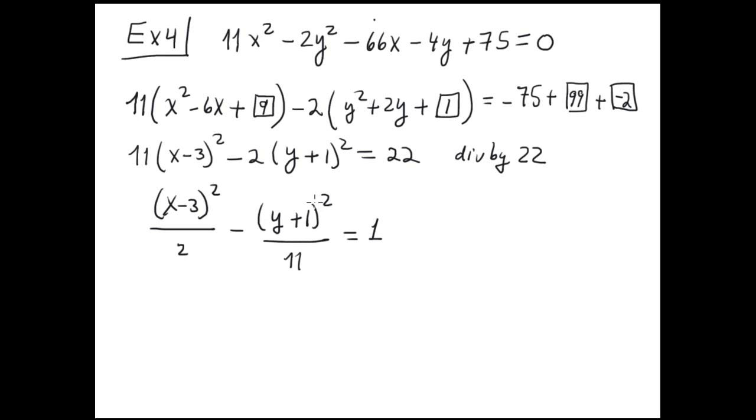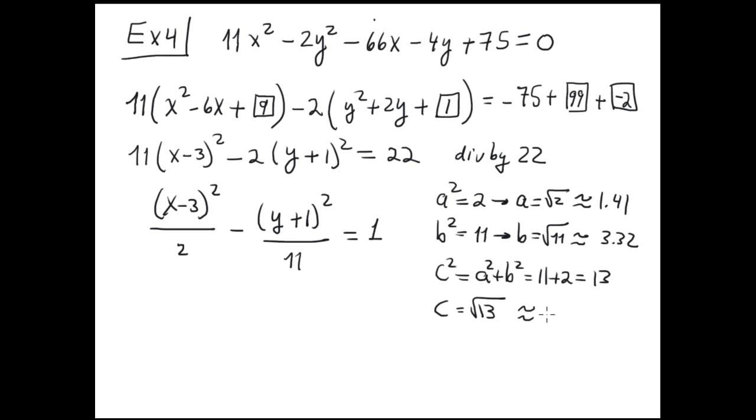Identification. This hyperbola has the transverse axis parallel to the X axis. A squared is 2, then A is radical 2, and radical 2 is approximately 1.41. B squared is 11, B equals radical 11, and radical 11 is approximately 3.32. And C squared equals A squared plus B squared. This is the formula, and 2 plus 11 is 13. Square root 13 is approximately 3.6.